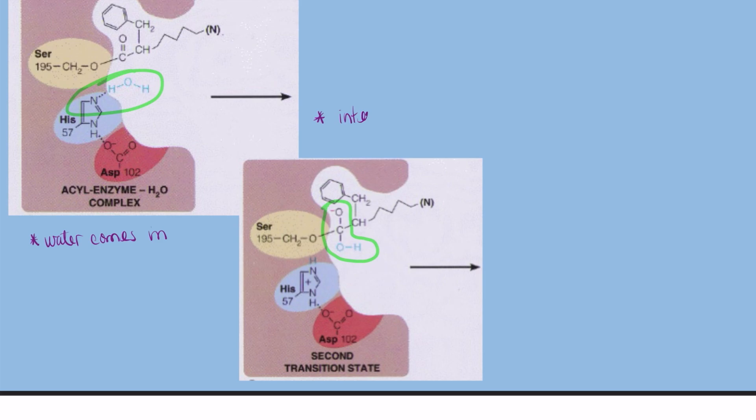Finally, as histidine-57 protonates serine-195, the enzyme returns to its original state, and the second product leaves the enzyme.